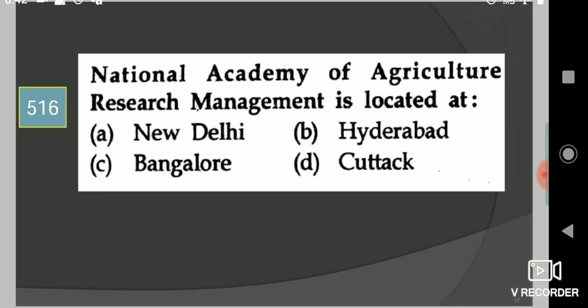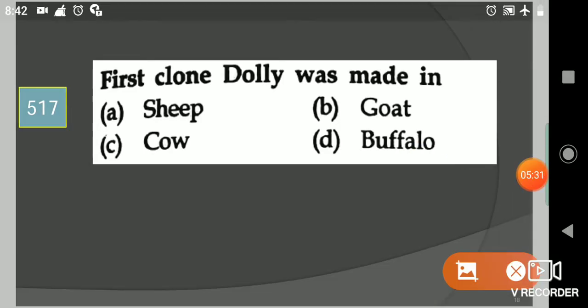Next question: First clone Dolly was made in? Your options are sheep, goat, cow, buffalo. Your answer is sheep, option A.